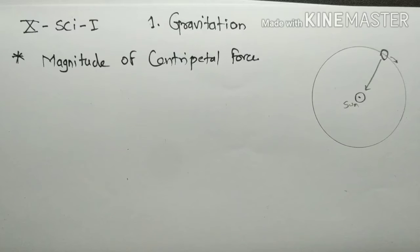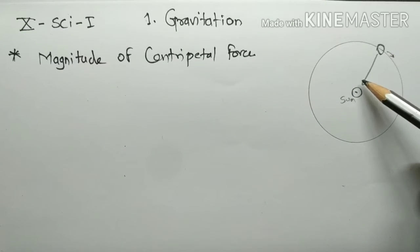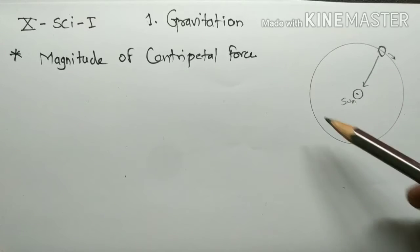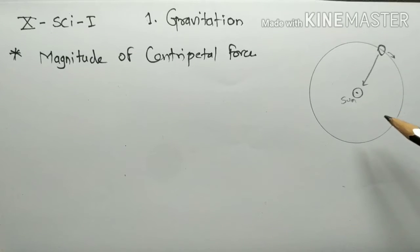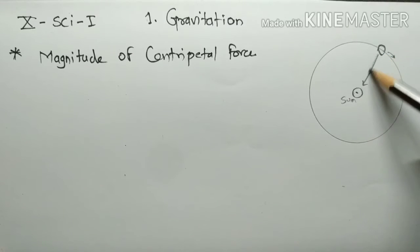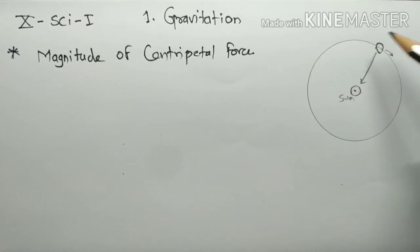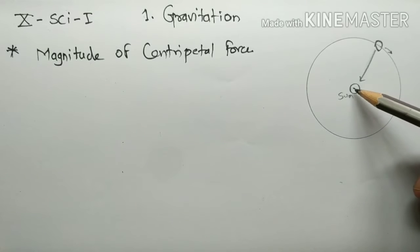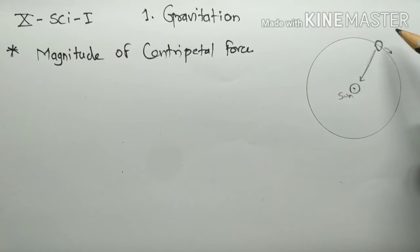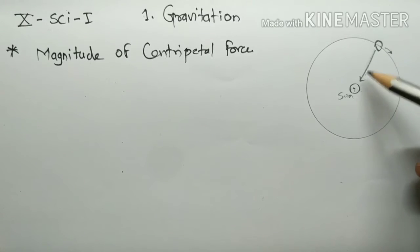What is the magnitude of centripetal force? Consider an object moving in a circle with constant speed, such that this motion is possible only when the object is constantly acted upon by a force directed toward the center of the circle. This force is called the centripetal force.